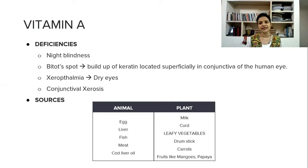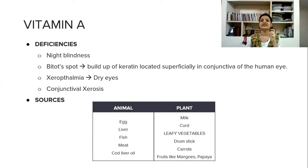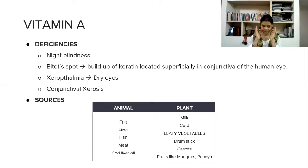Deficiencies of vitamin A include: night blindness, where there is dryness of the eye and impaired vision particularly in low light — as it becomes evening, the person cannot see well. Bitot's spot is a triangular patch mainly on the conjunctiva of the eye. Xerophthalmia is an eye disease where there is dryness of the eye; if not treated properly it may lead to complete blindness. Conjunctival xerosis is another condition involving dryness of the eye due to vitamin A deficiency.